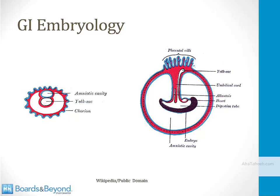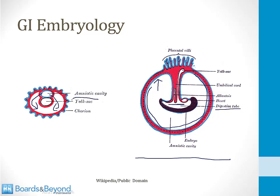Early in development, the embryonic disc folds in multiple directions — including in and out of the screen — so it folds in four directions and wraps around the yolk sac. After a few weeks, the amniotic cavity stretches all the way around the growing embryo. The white area in the middle, which used to be the yolk sac, becomes a hollow tube called the digestive tube.